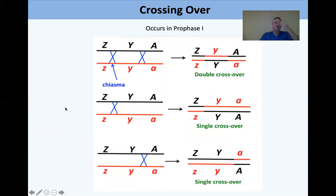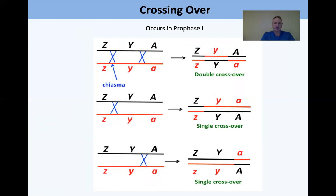Crossing over occurs in prophase one. Here's crossing over between three hypothetical genes Z, Y, and A. In this double crossover represented by the chiasma, there's genetic exchange between the red and black such that big Z crosses over, picks up little Y, comes back up and gets big A, yielding Z-little-Y-A. Double crossovers are far more rare than single crossovers.